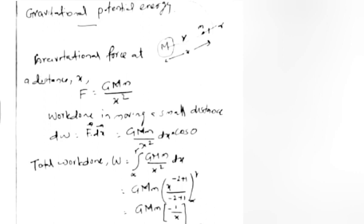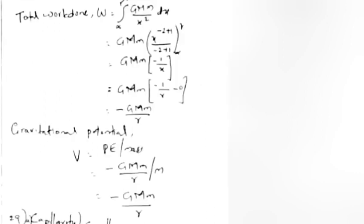Work done in moving small distance: dW equals F dot dx equals GMm by x squared dx times cos theta. Total work done: W equals integral GMm by x squared dx equals minus GMm by r. Gravitational potential V equals PE by mass equals minus GM by r.